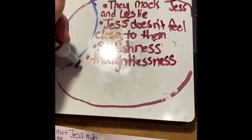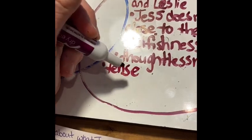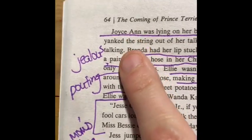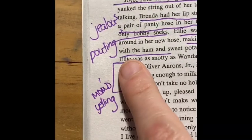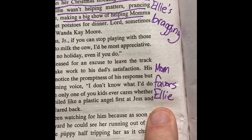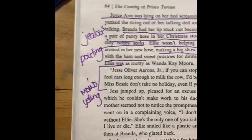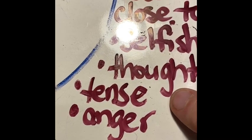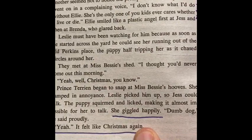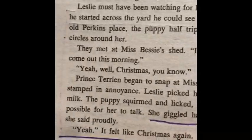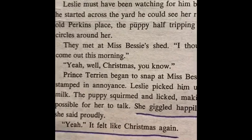Dad's complaining, the whole house is tense and everybody's angry — so we'll put tense on the purple side. There's a lot of tension and anger. Merry Christmas to you too, dad. We've got Joyce Ann screaming, Brenda's jealous, Ellie's bragging, mom's yelling, and she favors Ellie even though Ellie's a brat while Jess is the one doing what he's supposed to do. All that text evidence supports the inference that in the Aarons' house, things are tense and angry. Thankfully, by the end of the chapter, Leslie and Jess are back together to play — she's giggling, everybody's happy, and 'it felt like Christmas again.'